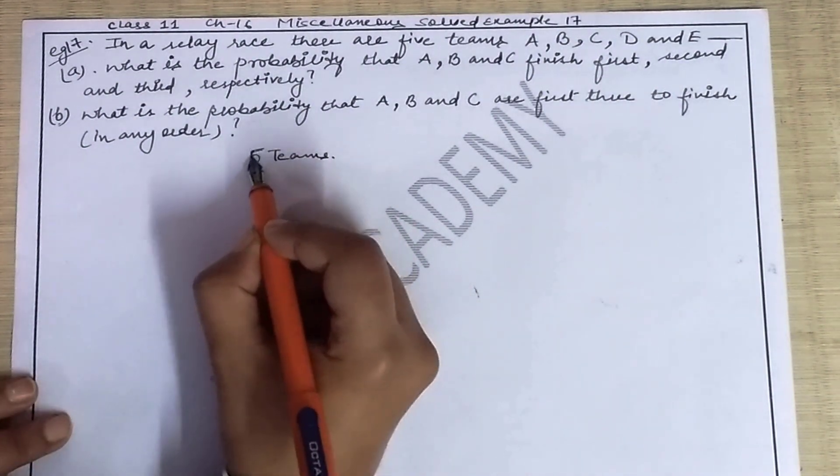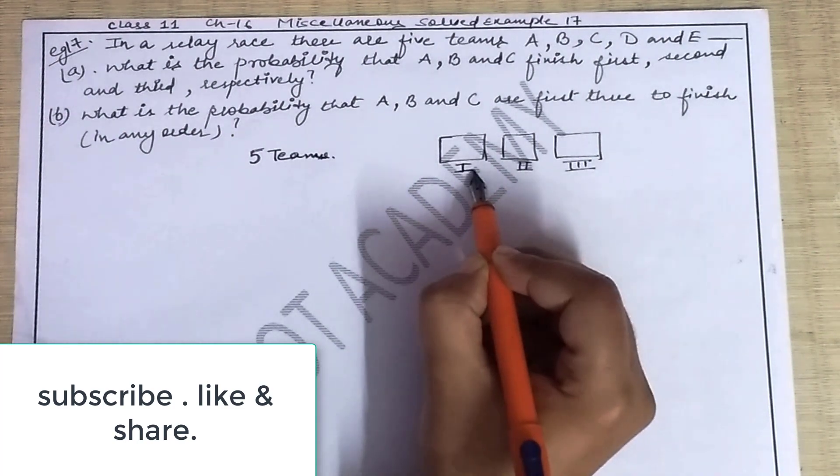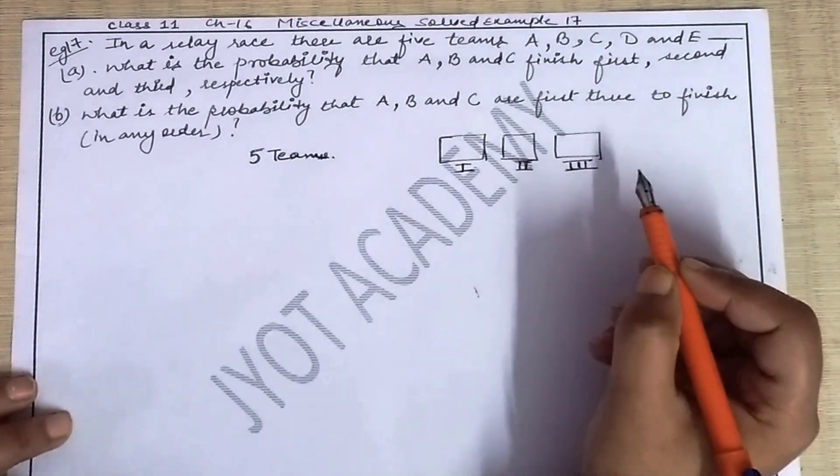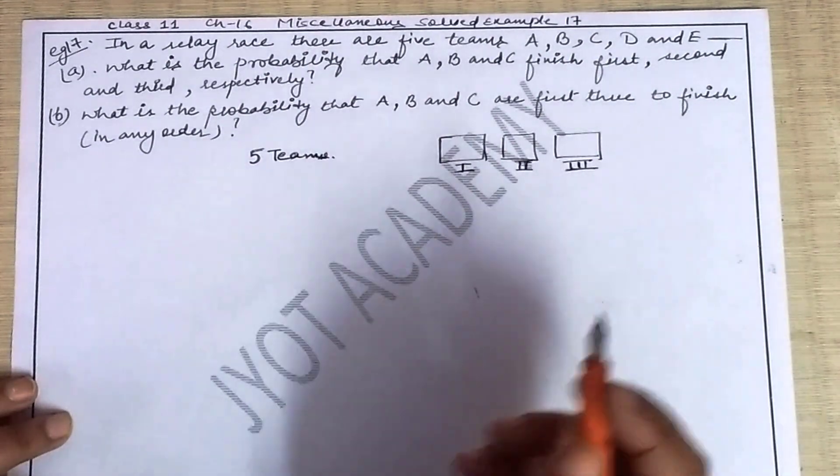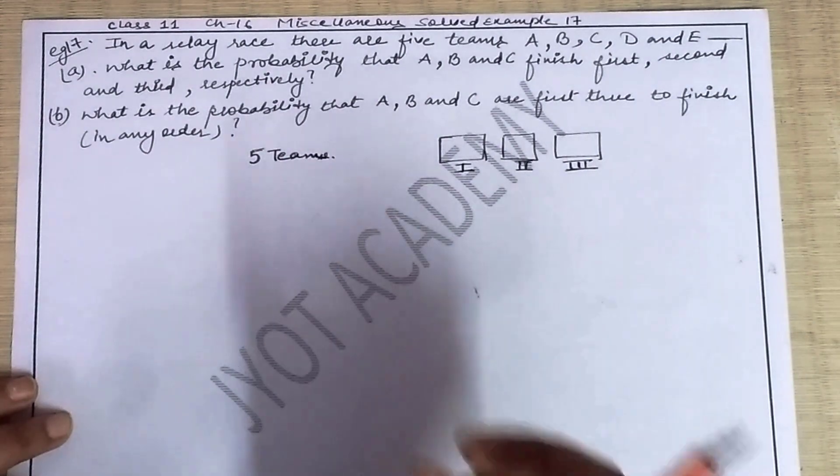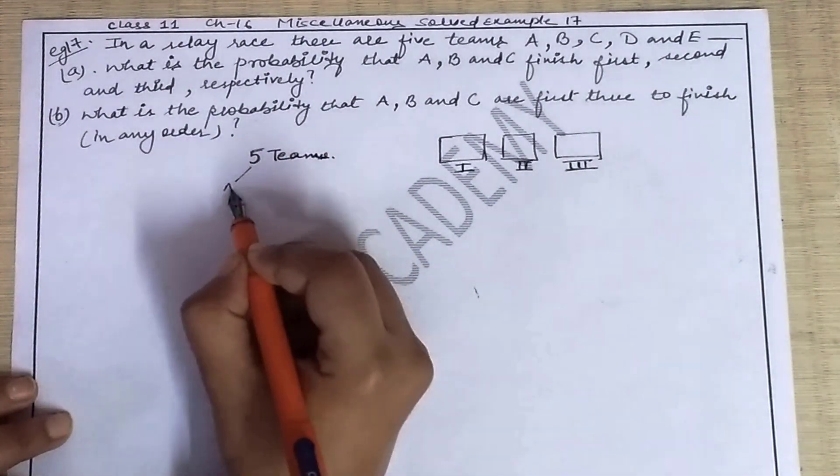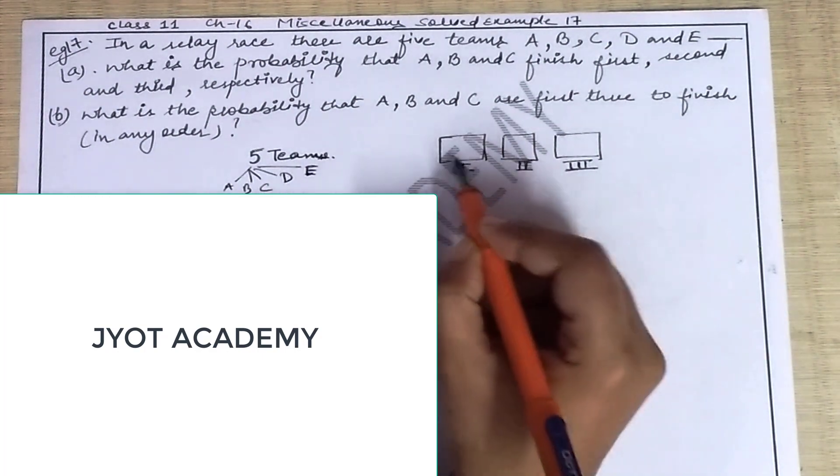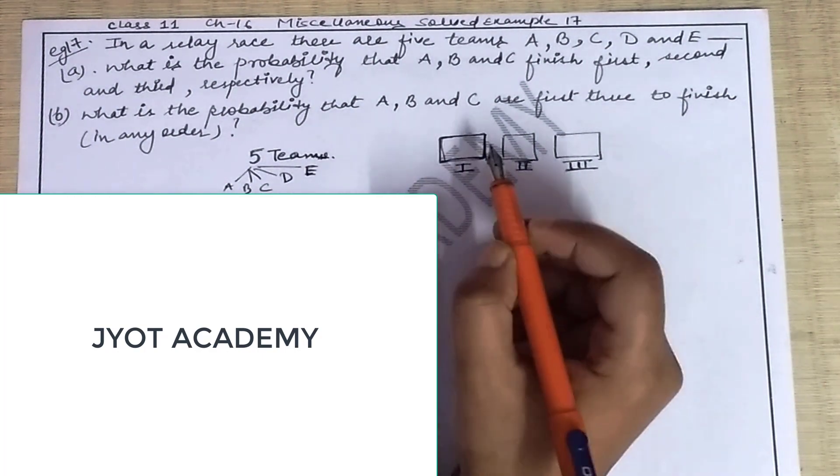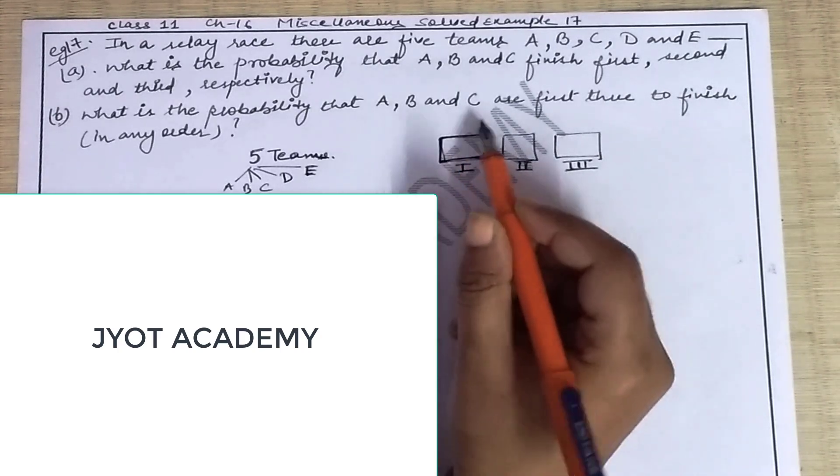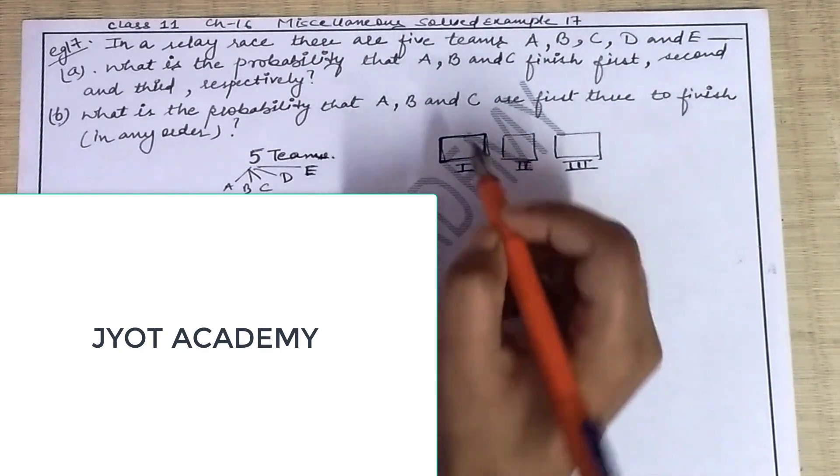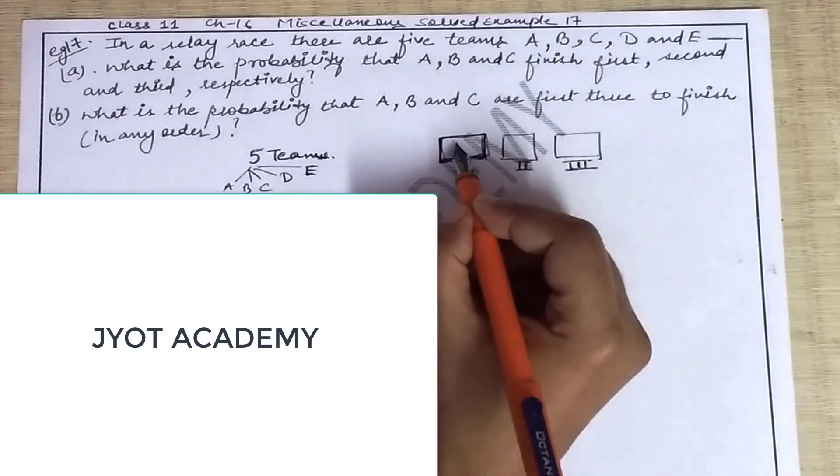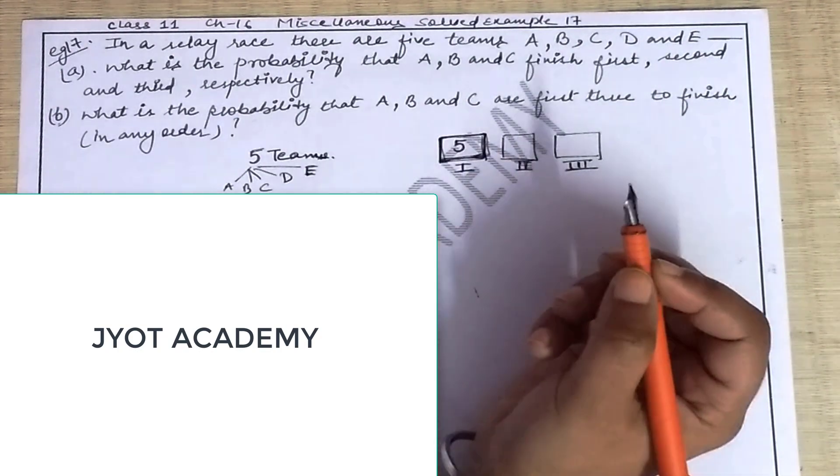First, we have five teams. Any team can hold the first position, any team can hold the second position, and similarly any team can hold the third position. So before finding probability, you need to know the total value. Then you'll work on your conditions. Here we have five teams total: A, B, C, D, and E. Any team can hold the first position. So in this box, any one of the five teams can come. How many choices do I have here to put a team for first position? Five teams are available, so any of the five can come. So here I'll write five.